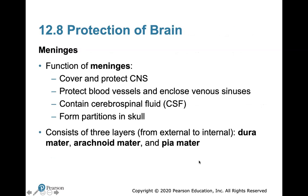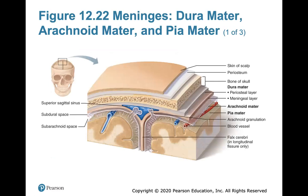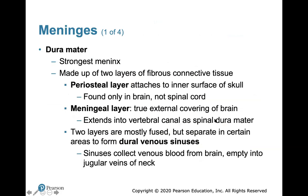The function of the meninges is to cover and protect your central nervous system. There are three layers — they protect blood vessels, enclose venous sinuses, contain cerebrospinal fluid, and form partitions in the skull. From external to internal, the three meningeal layers are the dura mater, the arachnoid mater, and the pia mater. Going from superficial to deep in the skull, you have the skin of the scalp, the periosteum covering the bone, then the dura mater, arachnoid mater, and pia mater layers.